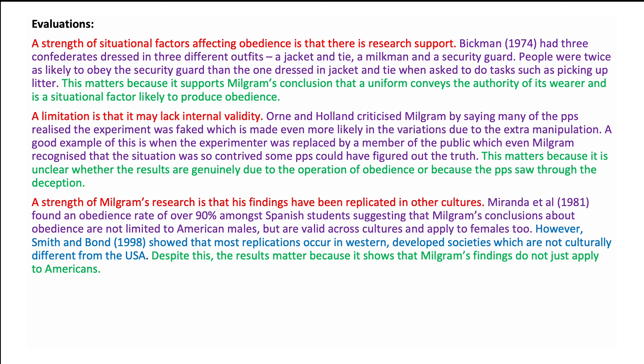Bickman in 1974 had three confederates dressed in three different outfits: a jacket and tie, a milkman, and a security guard. It was found that people were twice as likely to obey the security guard than the one dressed in jacket and tie when asked to do tasks such as picking up litter. This supports Milgram's conclusion that a uniform conveys the authority of its wearer and is a situational factor likely to influence obedience.